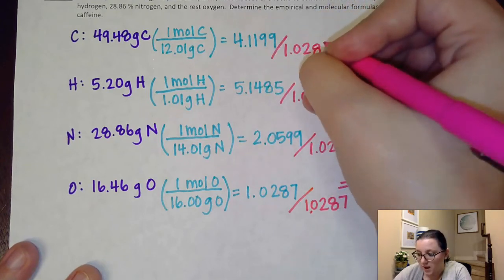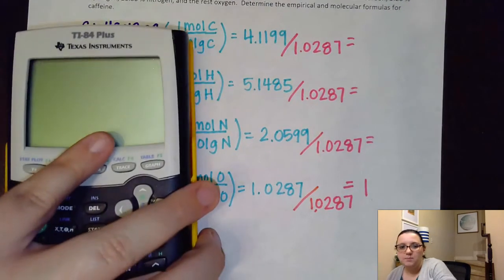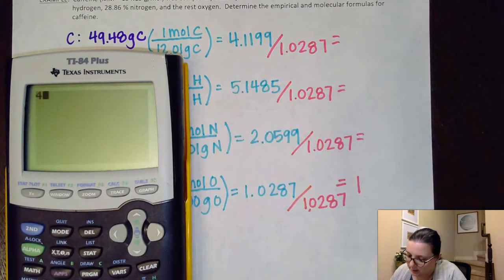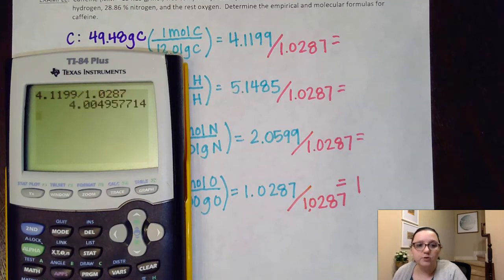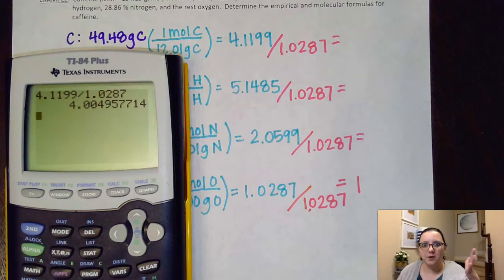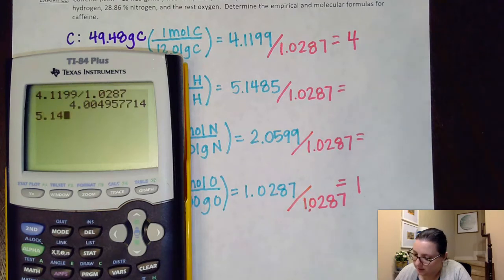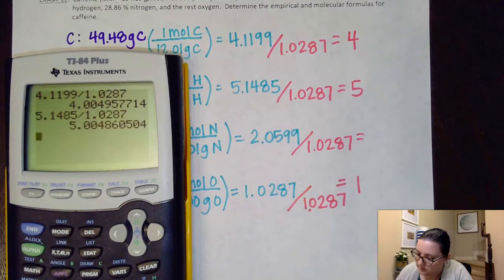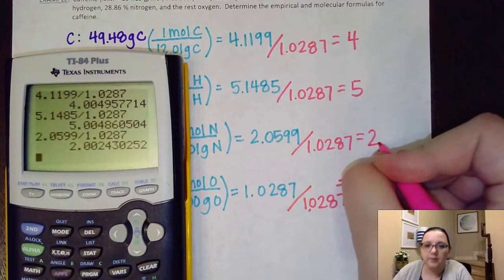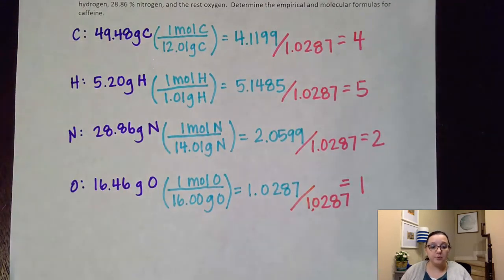Now what I mean by within hundredths of a whole number, I'm going to plug in this one just so we can kind of see here what this comes out to. That comes out to 4.004. That is pretty much 4, right? I'm within thousandths here of 4, not even just hundredths. So I'm going to assume that this is 4. Same thing goes for the next one. 5.1485 divided by 1.0287. I see that comes out to 5, and this one right here comes out to be 2. So luckily for us, these all came out to be whole numbers, and so I don't need to use the next step in the saying, multiply till whole.